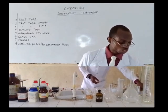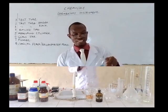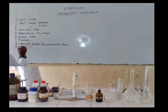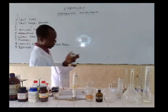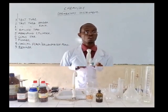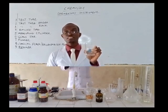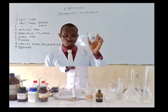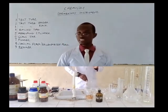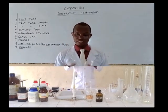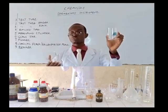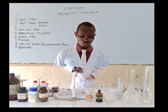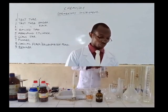We also have what is called the beaker. This is an example of a beaker. Beakers are used for titration purposes as well as for soil analysis and many other reactions. They are also of varying sizes — we have a 250 ml beaker, a 500 ml beaker, a 600 ml beaker, and many other sizes.